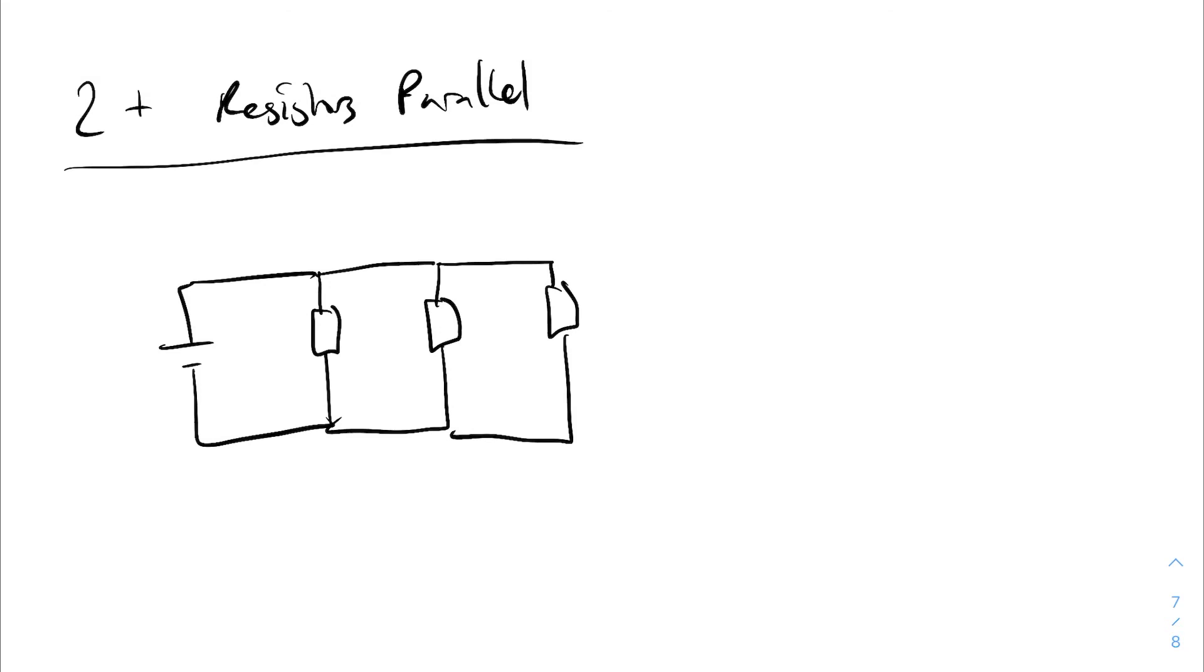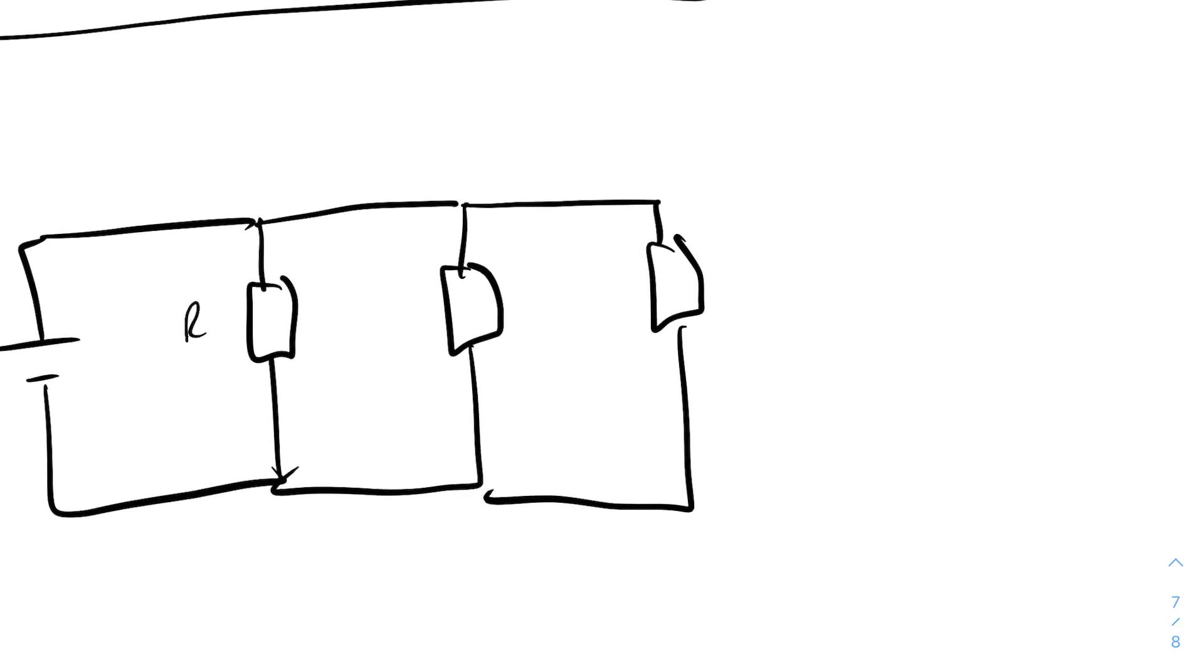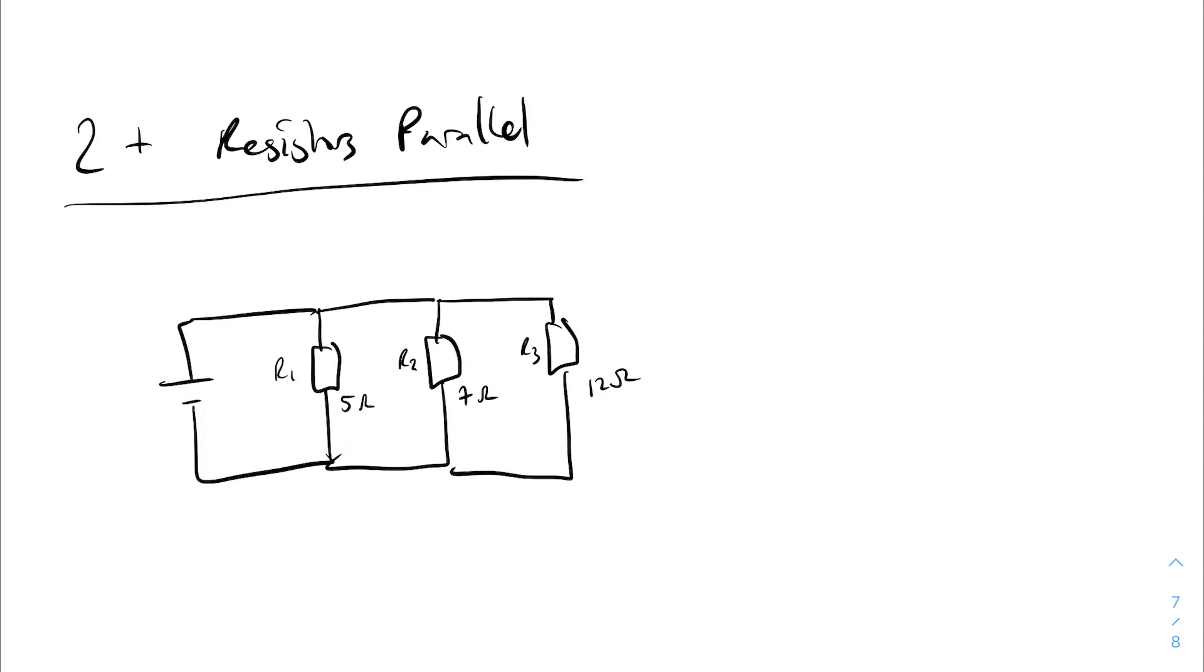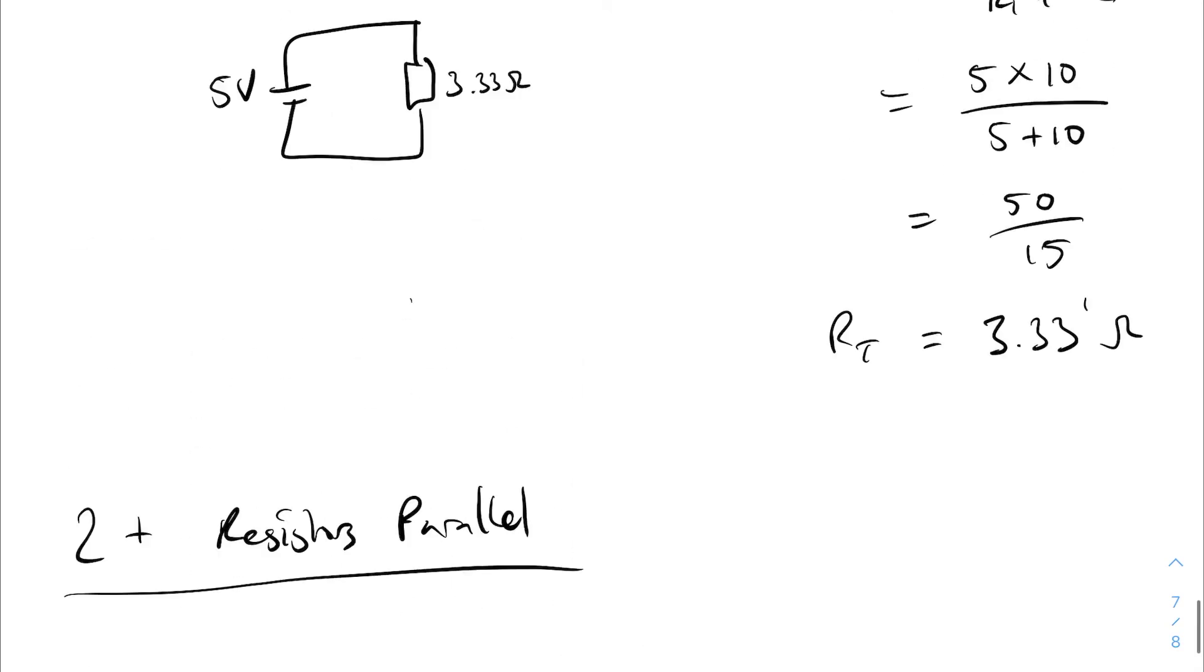So that's two resistors in parallel. Now let's do a 2 plus system in parallel, meaning a circuit with two or more resistors in parallel. So let's assume that we've got the same thing for r1, r2, and we'll do three for now. So this method applies to two, three, four, five, up to whatever, a thousand, ten thousand. So we've got r1, r2, and r3. Let's go five ohms, let's go seven ohms, and let's go 12 ohms. We'll give this a five volt battery as well.